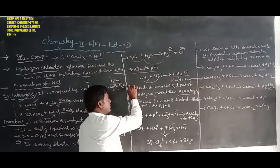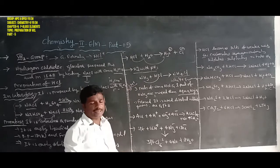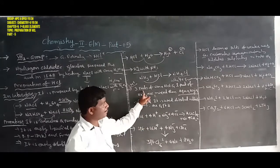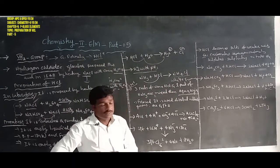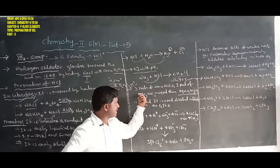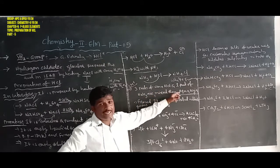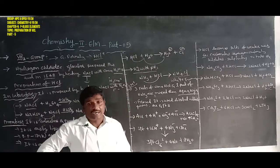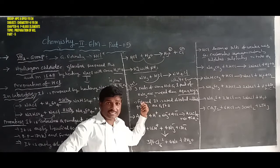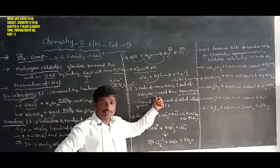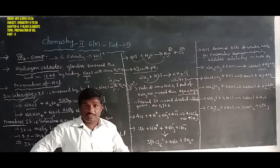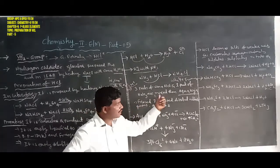Another important property: aqua regia (aquarisia). This is a very important two-mark question. Aqua regia is a mixture of three parts concentrated hydrochloric acid and one part concentrated nitric acid (HNO3). These two compounds mixed together are called aqua regia.